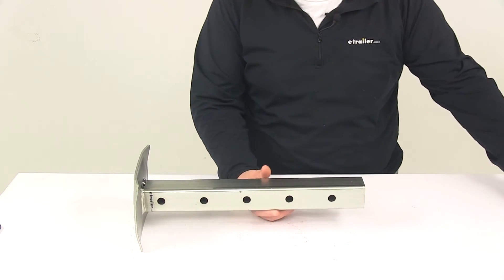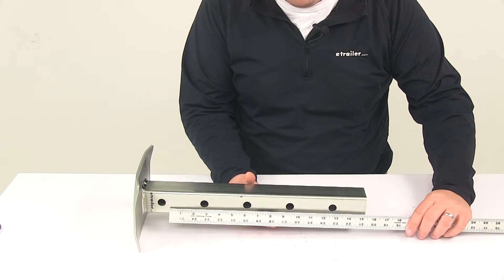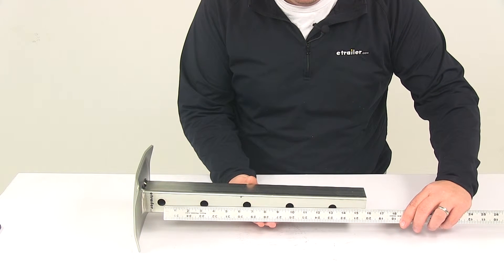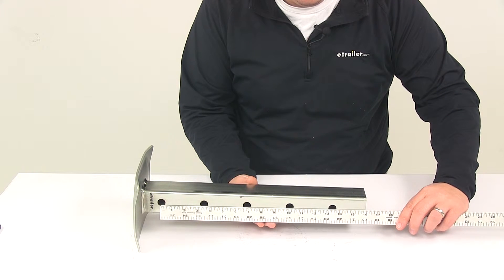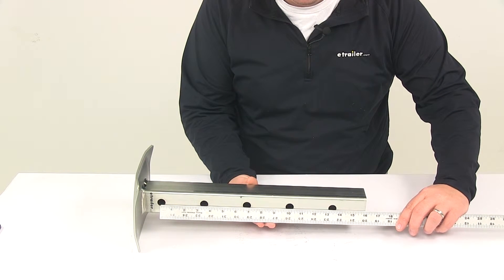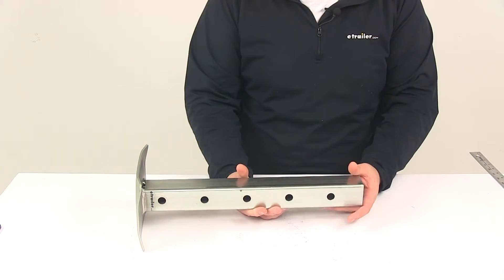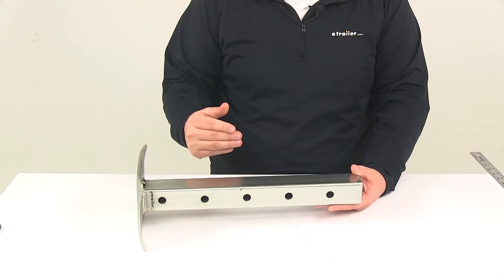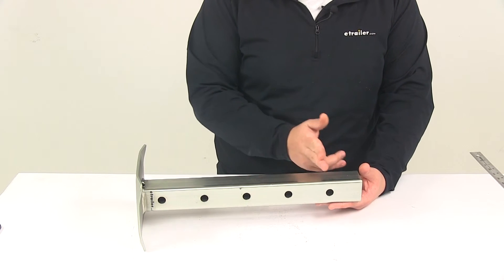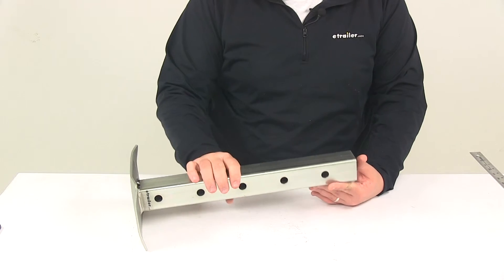If we do that measurement, we can see that center on center is right around 13 and a half inches. That means it can be adjusted in about three and three-eighths inch increments. The three and three-eighths inch measurement is the distance between each hole center on center.